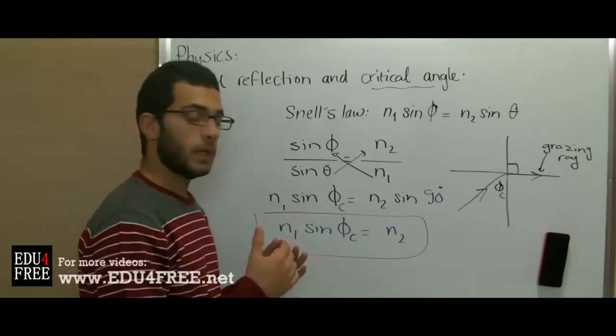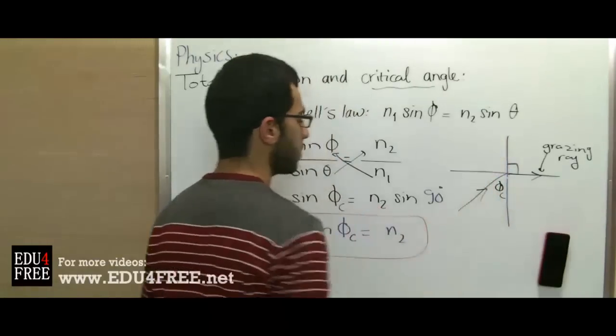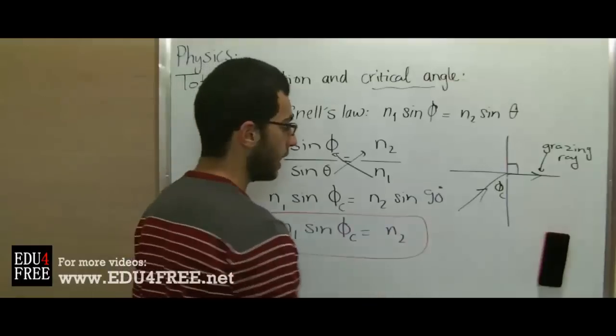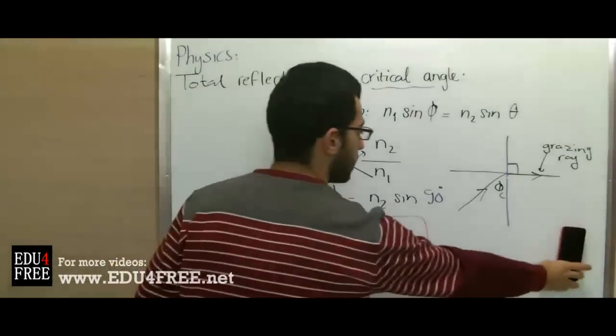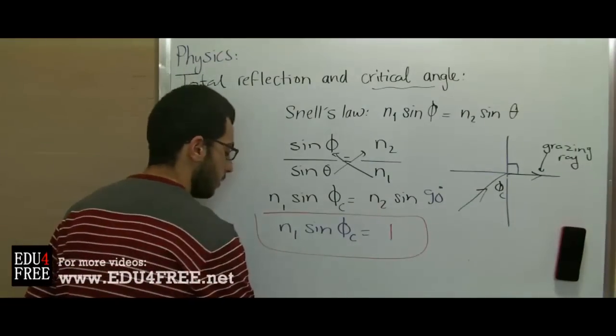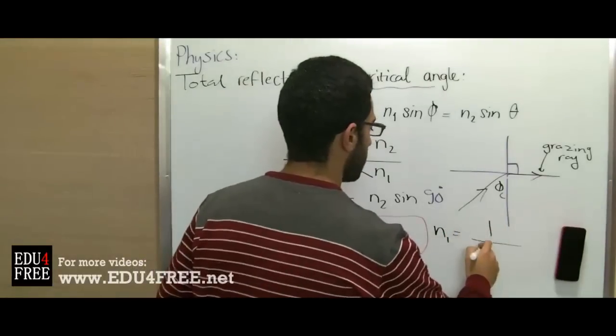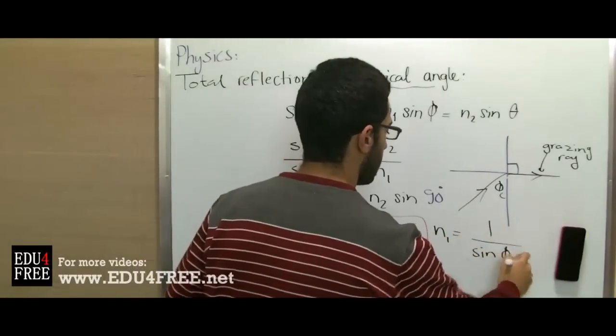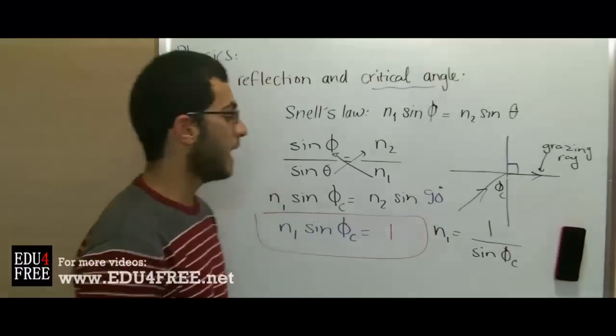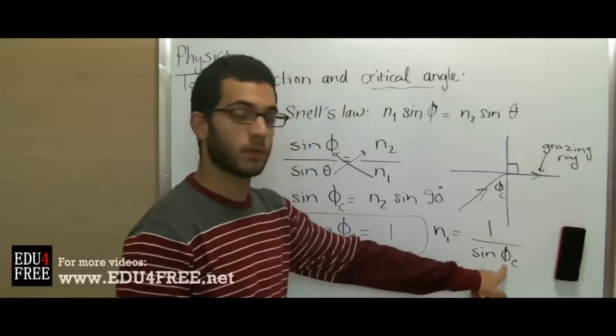If we are dealing with air, where light goes from a medium to air, the refractive index n2 will be of air, so n2 equals 1. Then we can say that n1 equals 1 over sine φc. From here, we can easily determine the refractive index of the medium if we know the critical angle, because it will equal 1 over sine of the critical angle.